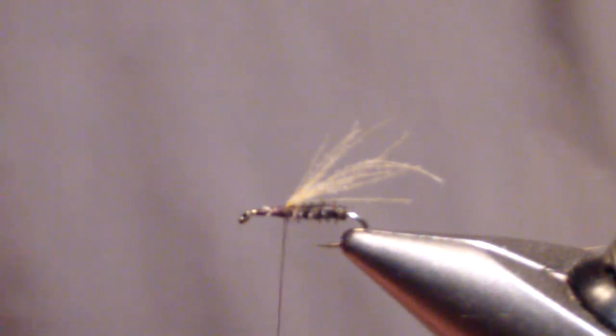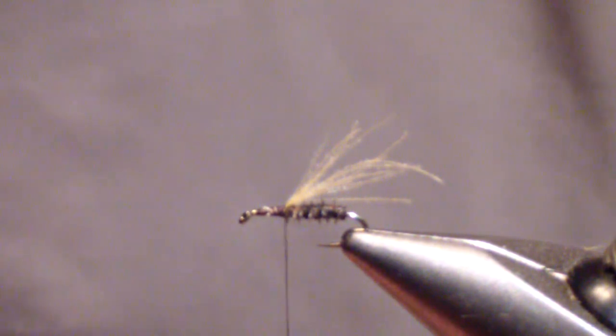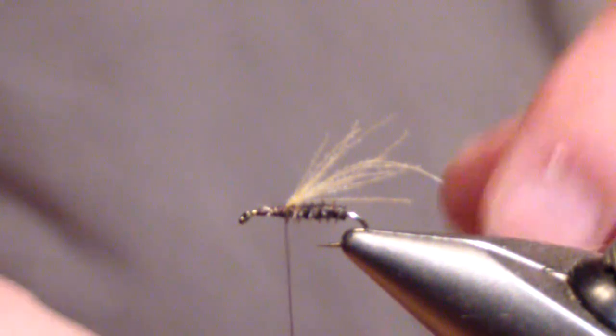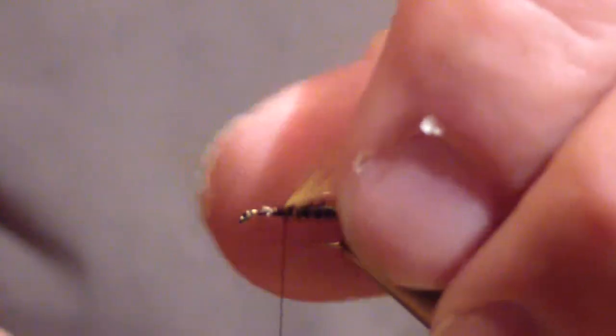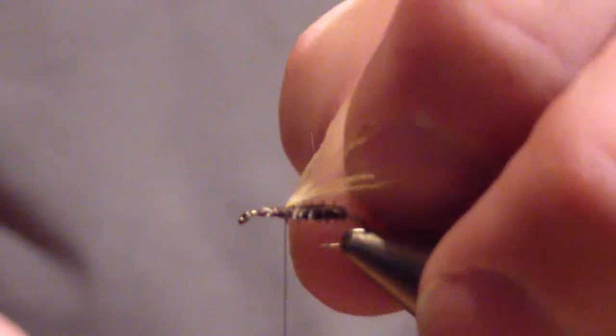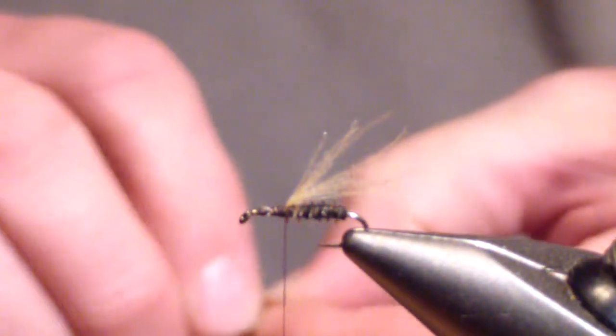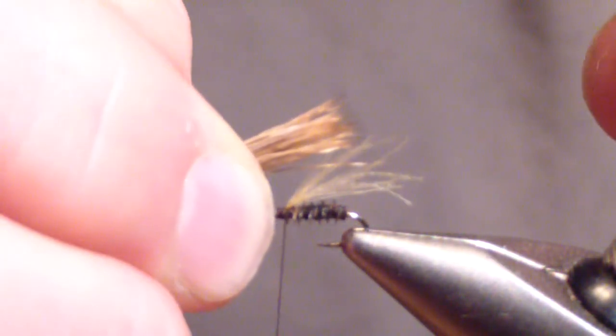And trim the butts. Give them a couple wraps so they don't spin. Next you're going to tie in your elk hair wing. Now in this pattern, I tie it with ginger dyed elk. I tie it with bleached elk or natural elk in the original pattern. But like I said, this is a stream specific variation and you're going to tie in your elk slightly shorter than your CDC.